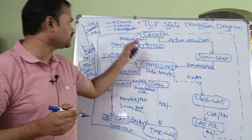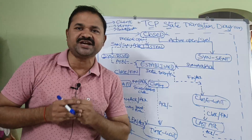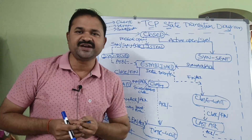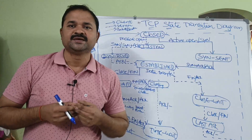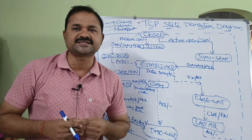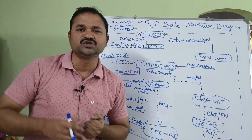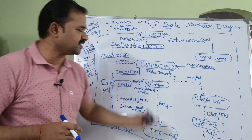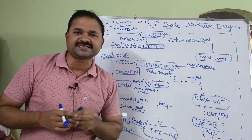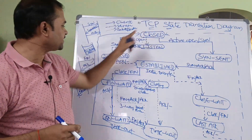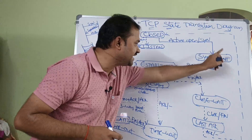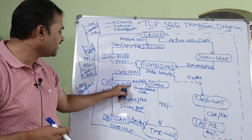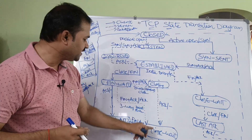Let us discuss the TCP state transition diagram. TCP connection management involves three phases: connection establishment, data transfer, and connection termination. During those three phases we come across various states such as closed, listen, SYN-sent, SYN-RCVD, established, FIN-wait-1, FIN-wait-2, closing, time-wait, close-wait, and last-ACK.